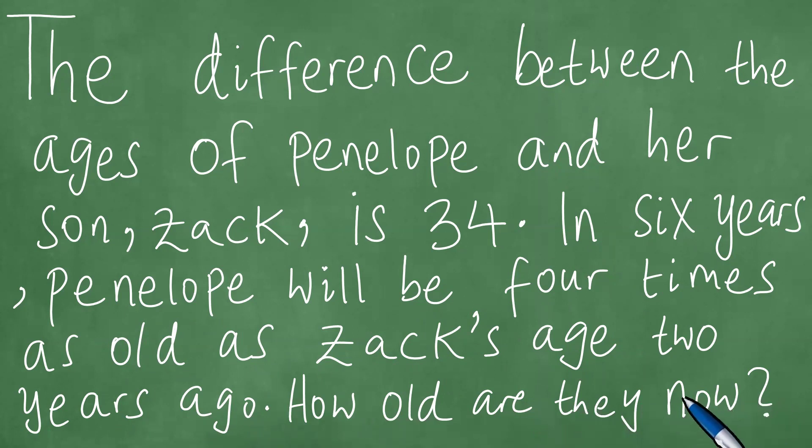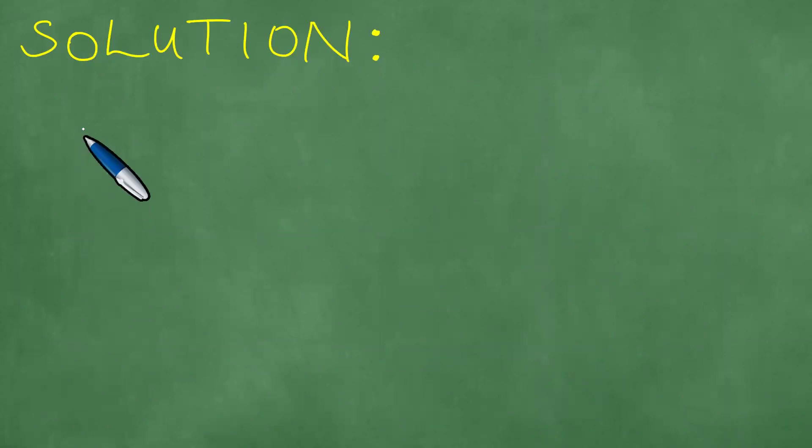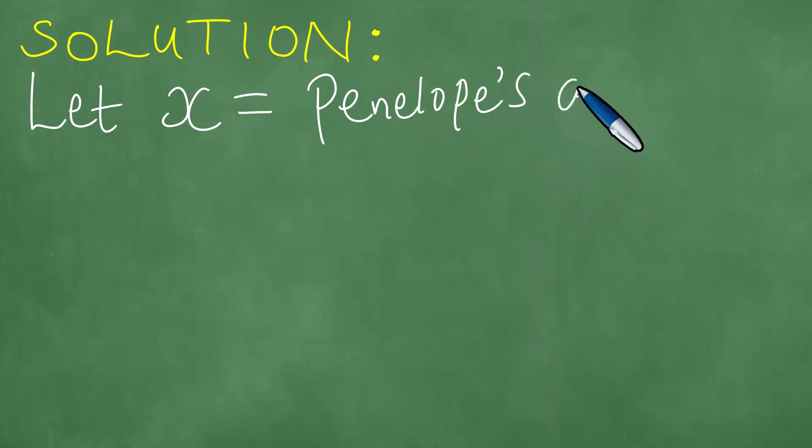We proceed to solve this problem and present a solution as follows. First things first, we let X be equal to Penelope's current age.